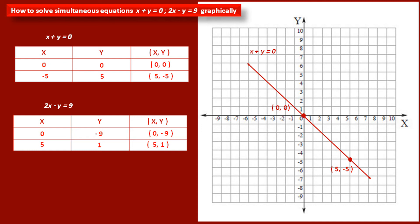Now we have to plot these two points on the graph to draw the line of the second equation. The first point (0, minus 9) is on the y-axis because its x coordinate is 0. The second point (5, 1) is in the first quadrant. If we draw a line passing through these two points, then this is the graph of equation 2x minus y is equal to 9.